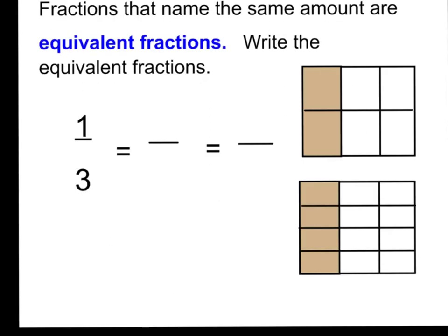Fractions that name the same amount are called equivalent fractions. Do you see this word right here, equivalent? I can hear the word equal inside of the word equivalent. That lets me know that equivalent fractions means that they're equal to one another. They have the same value. So I want to write the equivalent fractions for the two models we just discussed. I could say one third has the same value as two sixths. It also has the same value as four twelfths. This is called equivalent fractions.